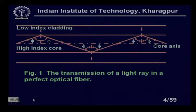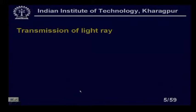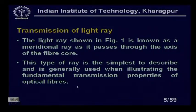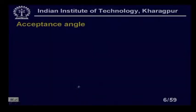Let us come to the basic principle of how light travels in an optical fiber. The light ray shown in figure one is known as a meridional ray, as it passes through the axis of the fiber core. This type of ray is the simplest to describe and is generally used when illustrating the fundamental transmission properties of optical fibers. Acceptance angle and numerical aperture are the basic definitions of the optical fiber we will discuss in this lesson.